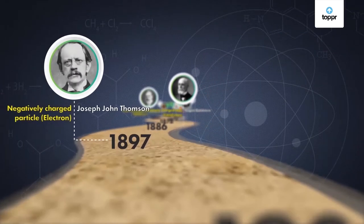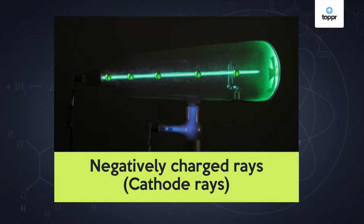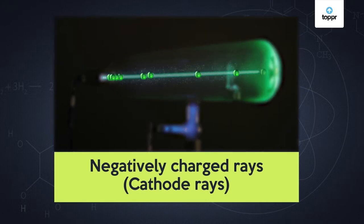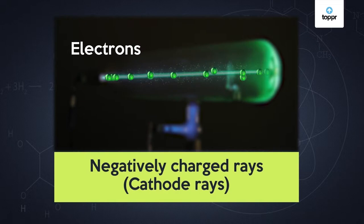Luckily, Thompson soon made a ground shaking discovery. He found that negatively charged rays are actually a stream of negatively charged particles. These particles were called electrons, a name given by Stoney.